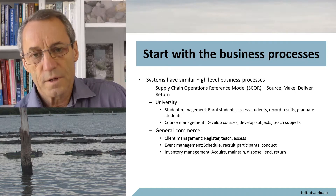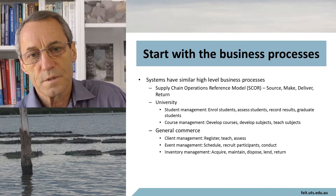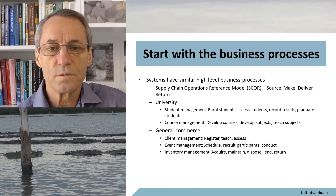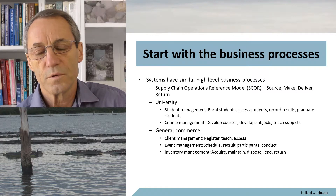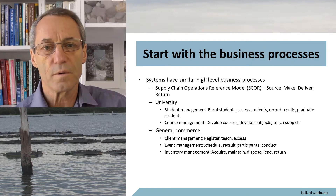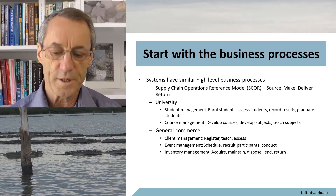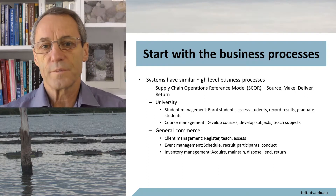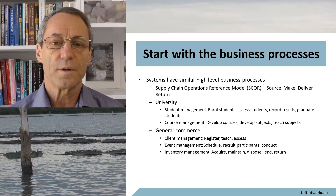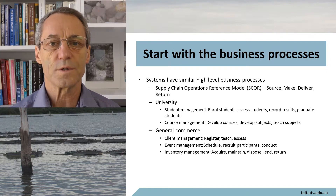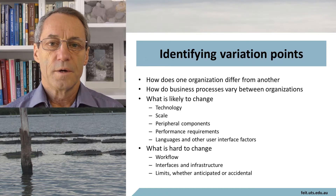In general commerce, we can have client management systems with common characteristics. We can have event management systems where you essentially schedule and plan the event, recruit participants, and then hold the event. Similarly, inventory management systems have: acquire, maintain, dispose, lend, return — very similar processes. The whole idea is that with product lines, you try to identify the common business processes across the potential market.